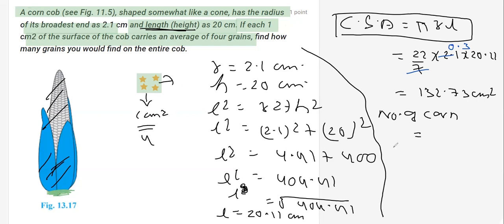So the total number of corn will be 132.73, that multiplied by 4. Right? Because in 1 centimeter square there are 4 corn, so this much centimeter square will comprise of this much centimeter square multiplied by 4.